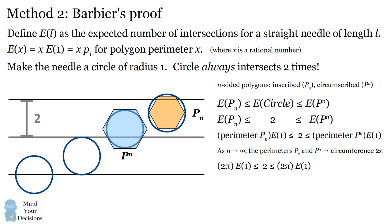We can substitute in two pi for those perimeters, and we've proven that E of one equals two divided by two pi, which is one over pi. In other words, the expected number of intersections for a needle of length one — or equivalently the probability the needle intersects one of the lines — equals one divided by pi. That's the clever and unique way to solve Buffon's needle problem.